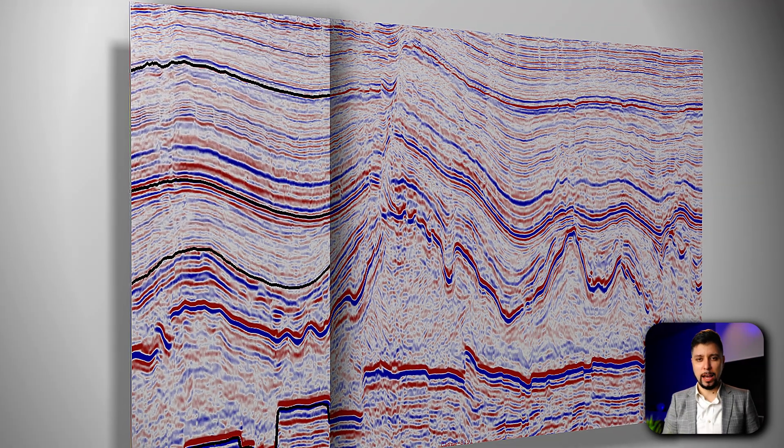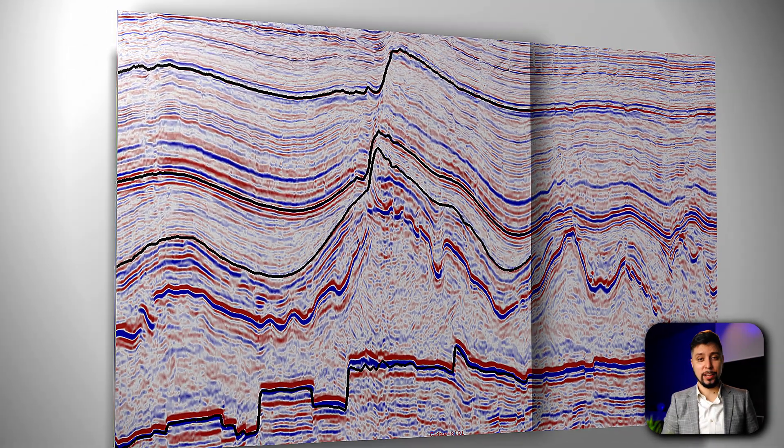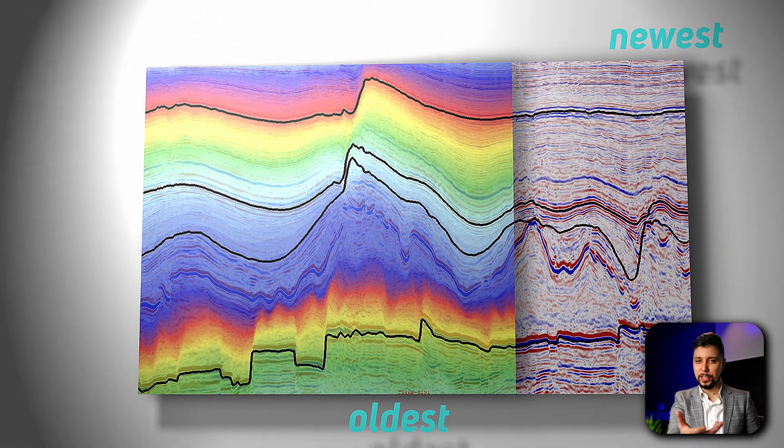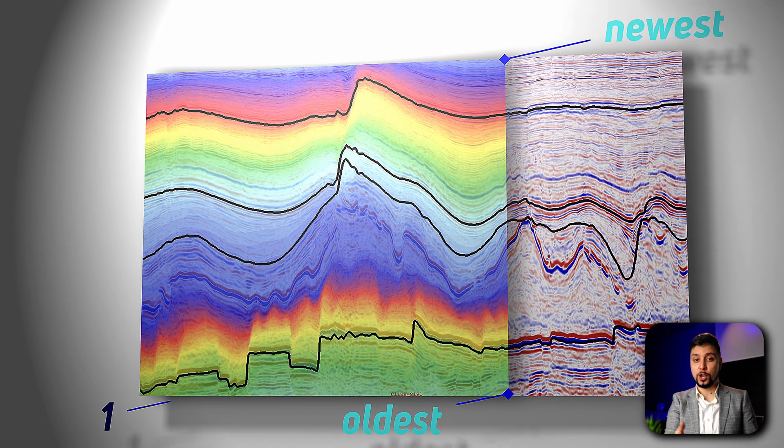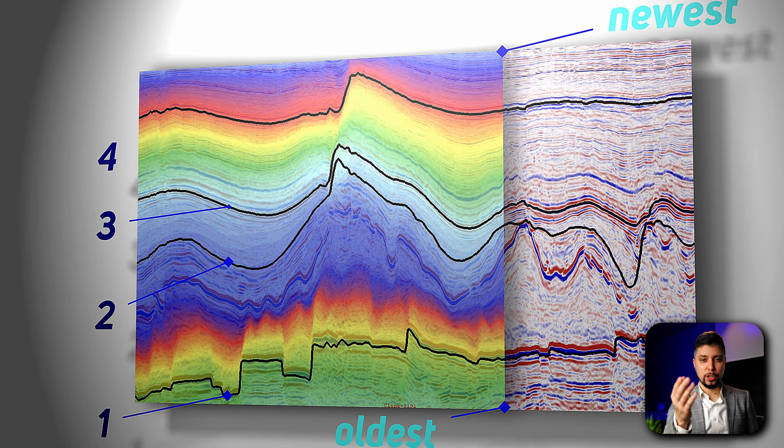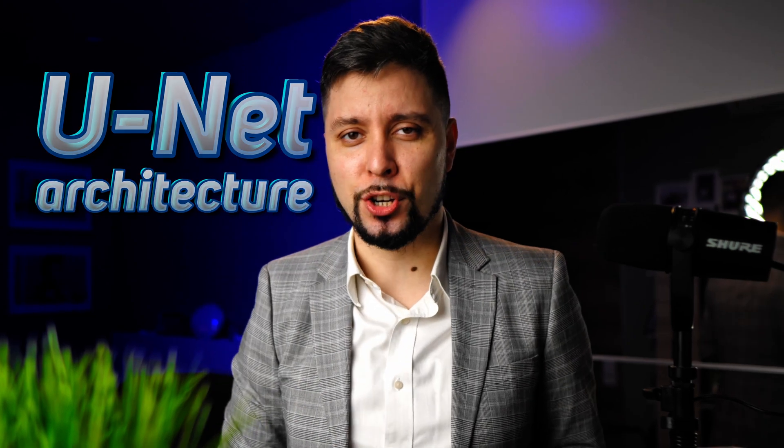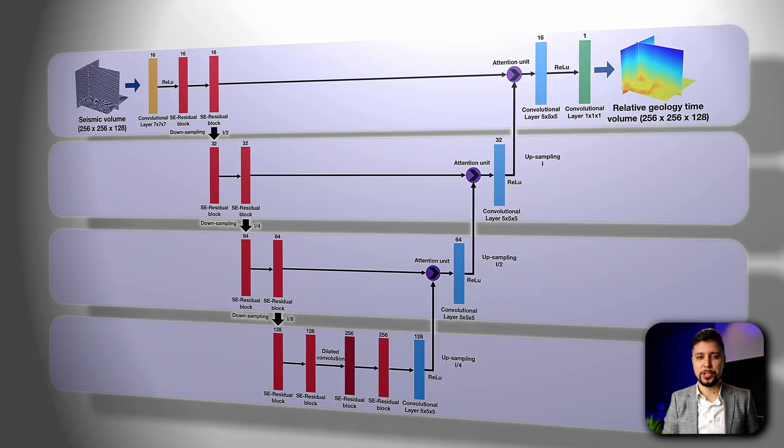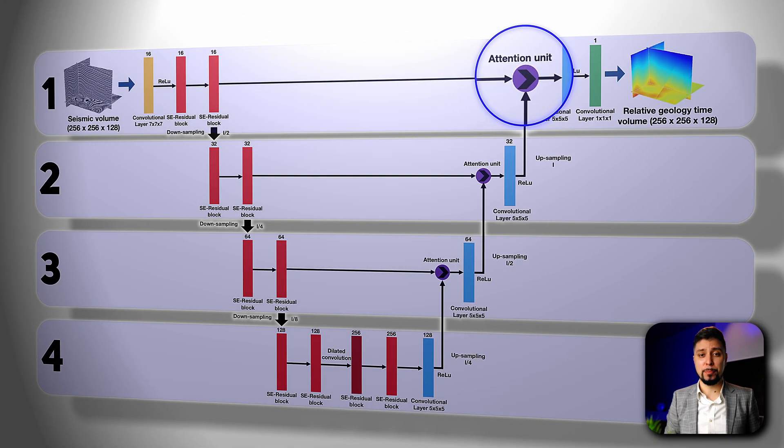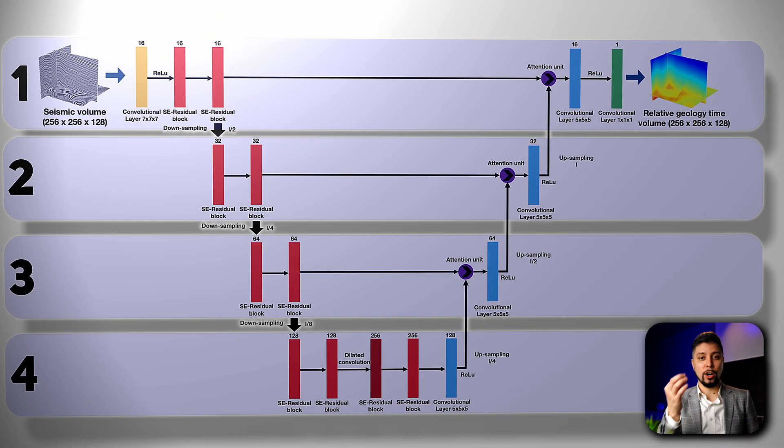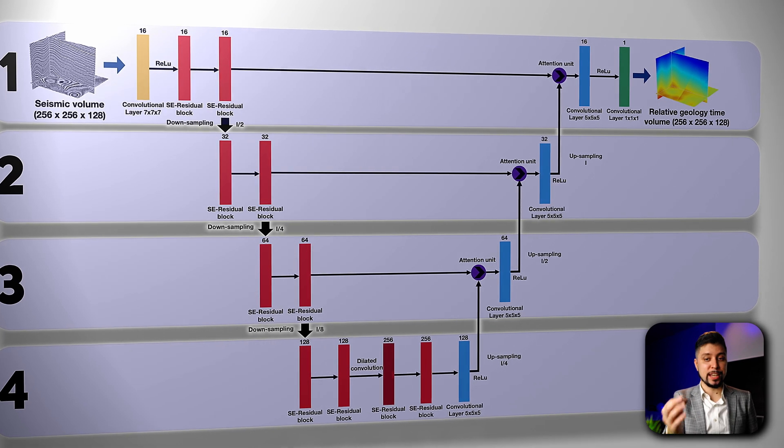Relative geological time is a measurement used in geology to determine the timing and sequence of geological events. It involves comparing the order of geological layers and structures to determine which came first, second, and so on. They proposed a deep neural network based on UNET architecture, which uses multiscale residual learning and attention mechanism to recognize structural patterns and estimate RGT volumes from 3D seismic images.